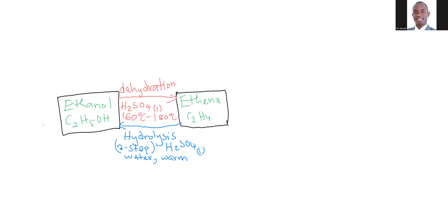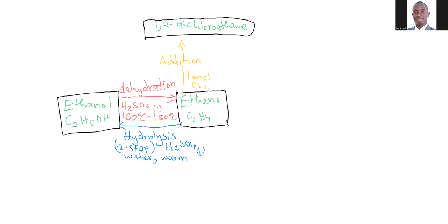Now we can talk about addition reactions that ethene can undergo. Let's talk about addition of chlorine. When we add one mole of chlorine to ethene, we end up with 1,2-dichloroethane — C2H4Cl2. This compound is formed from the process of addition reaction. This process has no special conditions; it just happens at low temperature and pressure.